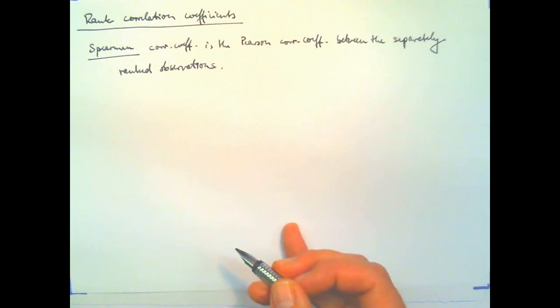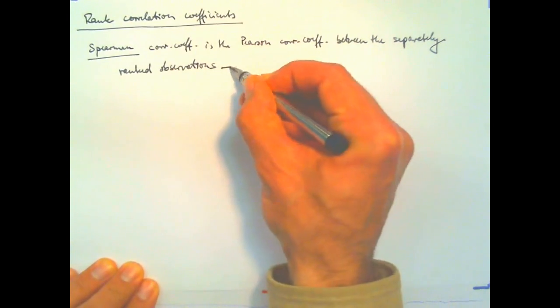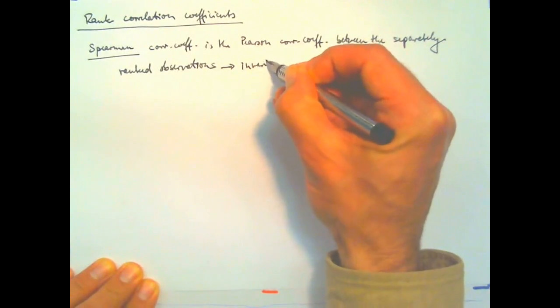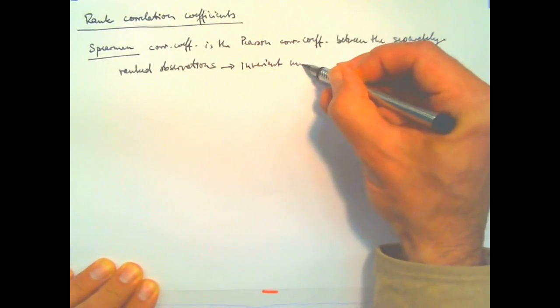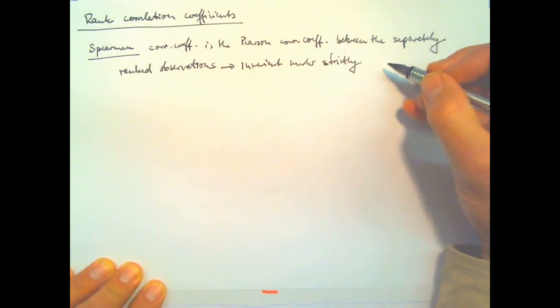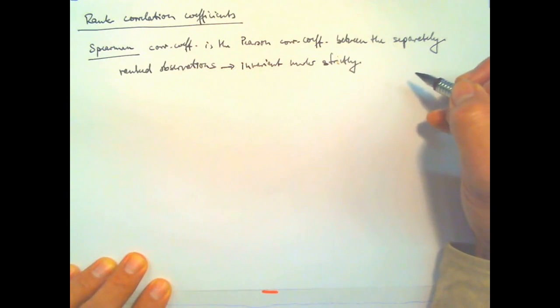So for each set of observations, you rank them individually and then compare these rank orders and you thus obtain a coefficient which, as opposed to the Pearson one, is invariant under any strictly monotonous transformation.